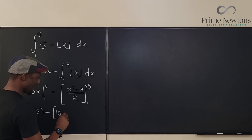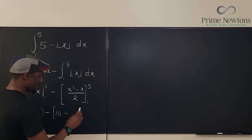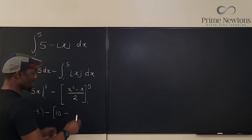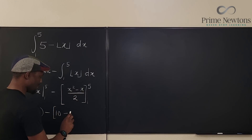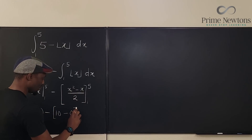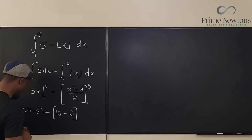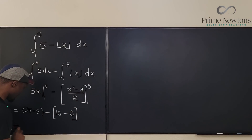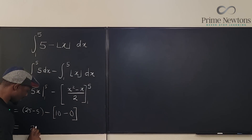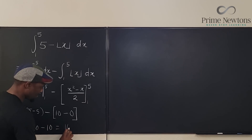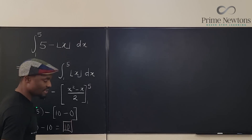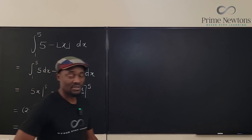Plugging in 1: 1 minus 1 is 0. So our answer is 20 minus 10, which equals 10. The answer to this integral is 10.